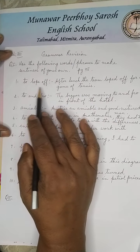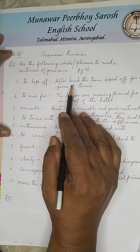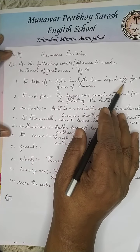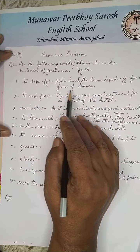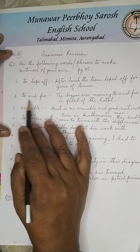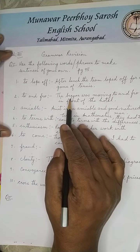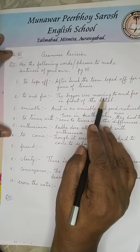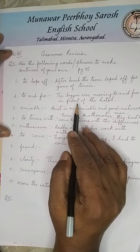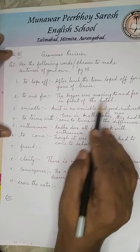To lope off: After lunch, the team loped off for a game of tennis. To and fro: The beggar was moving to and fro in front of the hotel.